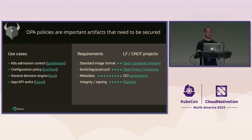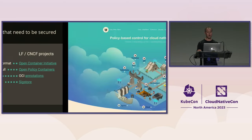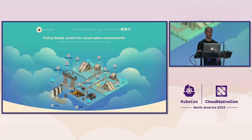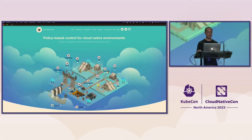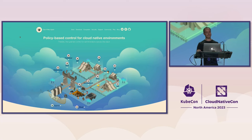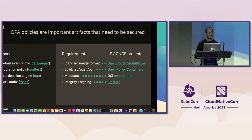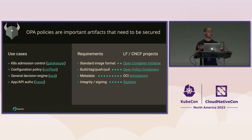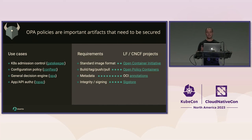You can also use OPA for projects like Topaz, which is an open-source project that Acerto has — an open-source project for authorization for APIs and applications.